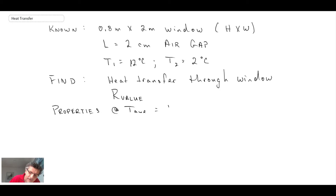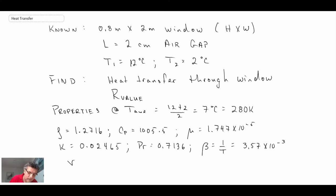So the properties here at T average, 280 Kelvin. So going into the property table and looking up the values for air. So those are all the properties that we may be using for this problem.